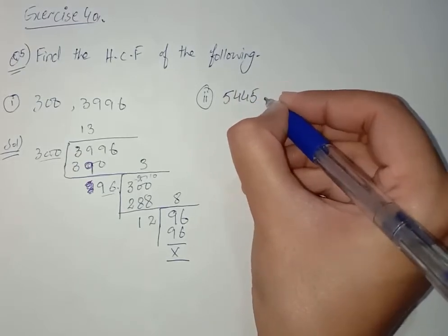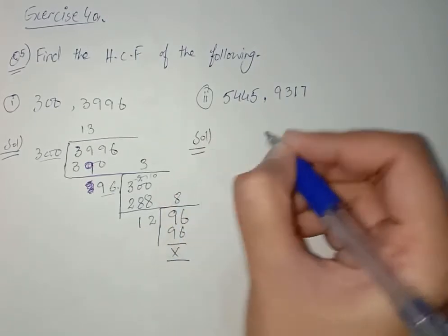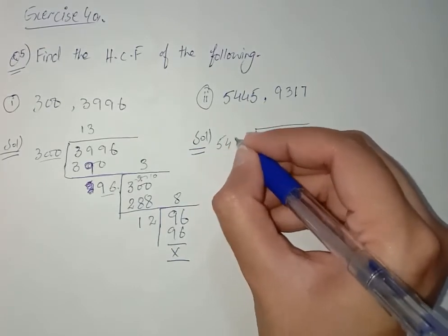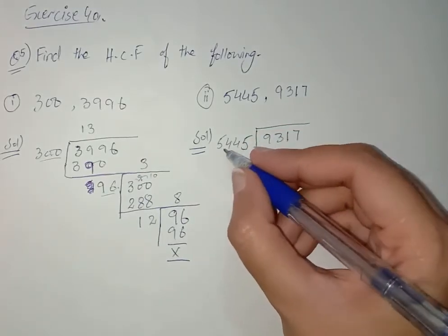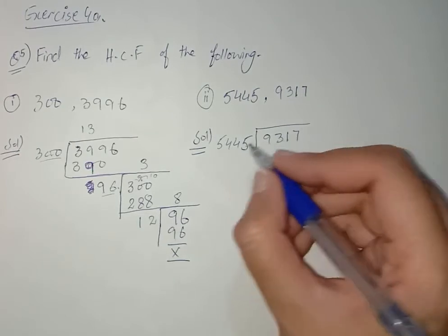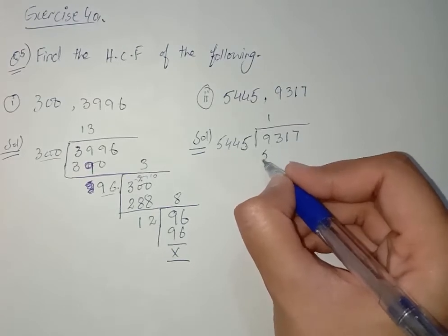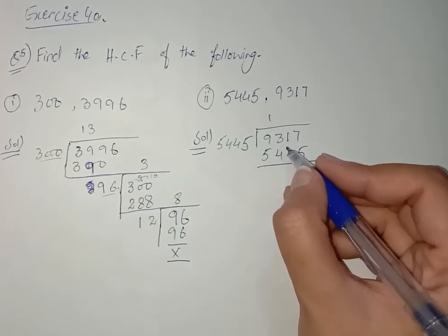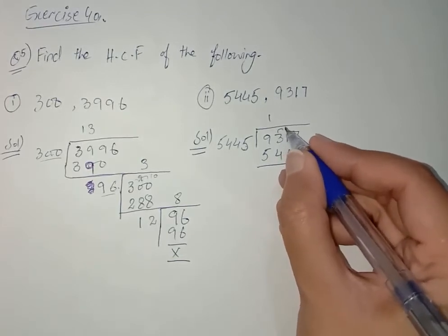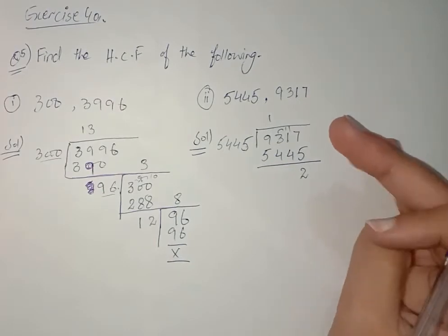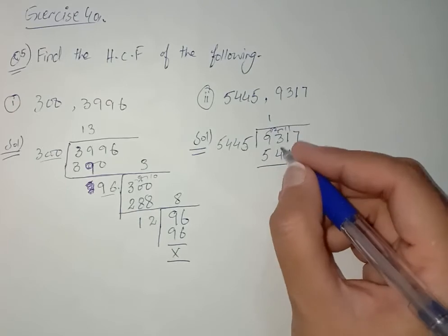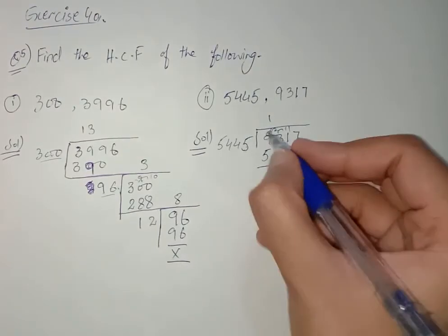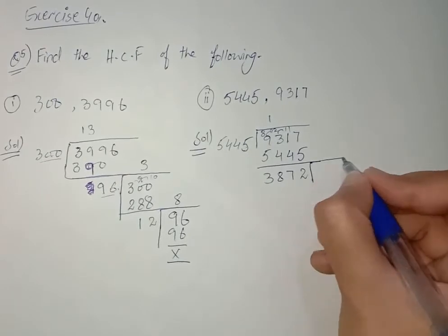Part number two is 5445 and 9317. We have to solve this: 9317 comes in the bracket and 5445 outside the bracket. If we multiply 5445 with two the value is bigger than 9000, so we use 5445 ones, which is 5445. Now we subtract — carrying through: the remainder is 3872.